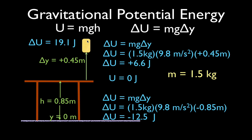You'll notice we could have gotten that same value, 19.1, by adding together the change in potential energy from the floor to the tabletop — plus 12.5 joules — and then from the tabletop to the elevated position, 6.6 joules. Adding 6.6 and 12.5 also gives 19.1 joules. You have to decide where your zero reference is when calculating the change in potential energy — that's the tricky part about potential energy.